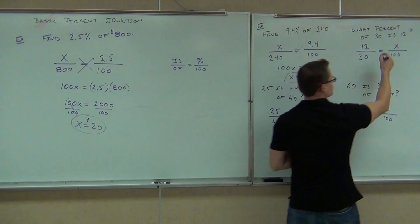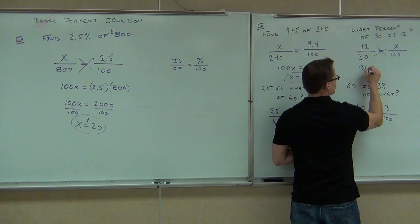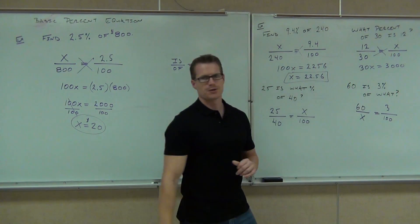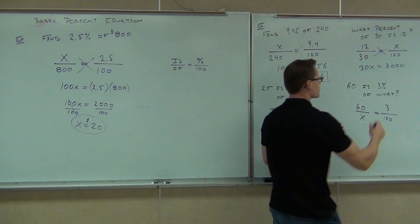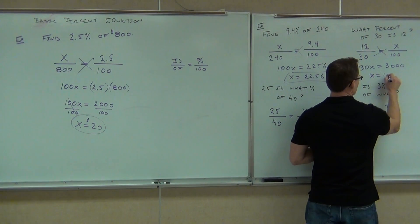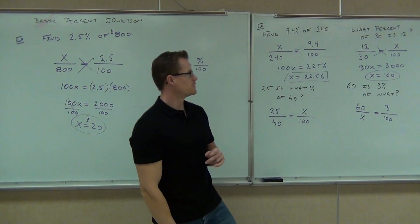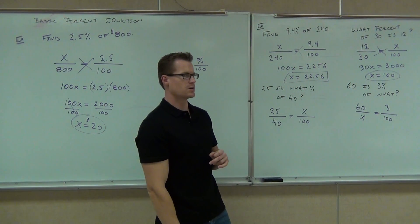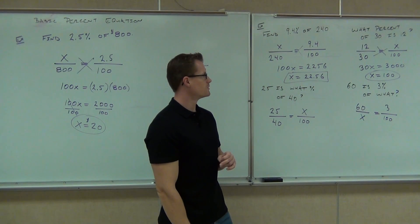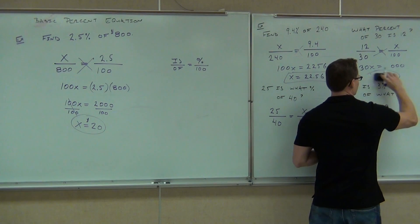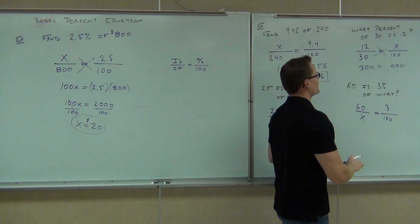Okay, next one. Of course, we're still going to cross-multiply. We get 30X equals 3,000. If 30X equals 3,000, we'll divide by 30, X equals 100. Yes? No, I did that wrong. No, I got it. You did a cross-multiply. I did. Oh, I used that 3 twice.